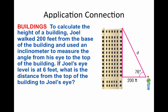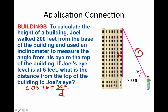Here's a real-world problem: calculate the height of a building. Joe walked 200 feet from the base of the building and used an inclinometer to measure the angle from his eye to the top. We're looking for height h. Then the problem changes and asks for the distance from the top of the building to Joel's eye — so now we're solving for the hypotenuse d.